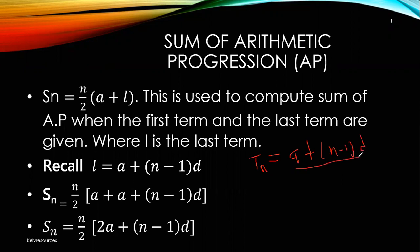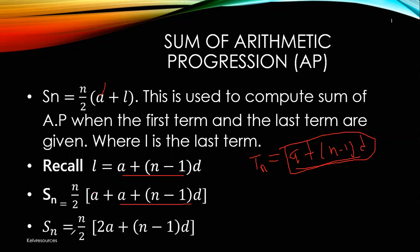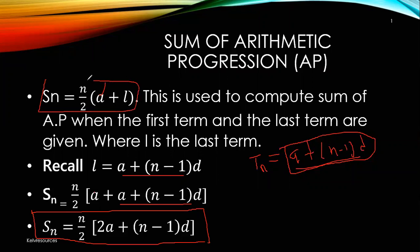That is any term. So the last term too — we can use this to compute it. So if you substitute this into the first formula, you'll be having N over 2 times (A plus L), where L is replaced by A plus (N minus 1)D. If you simplify this, A plus A gives 2A. So this gives us the second formula. So when computing the sum of AP, there are two formulas you need to remember.